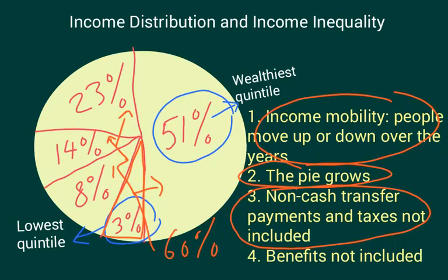Benefits that people earn on the job are also not included in these income distribution figures. The total value of all benefits — for example, health insurance benefits that people earn on the job — has actually increased over the past number of decades.